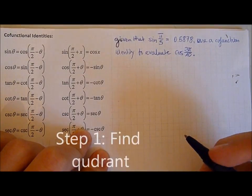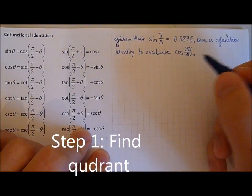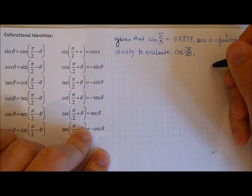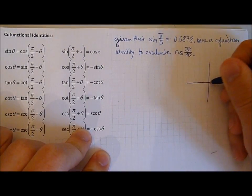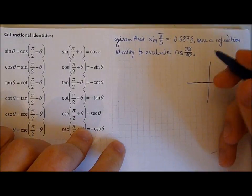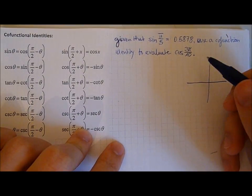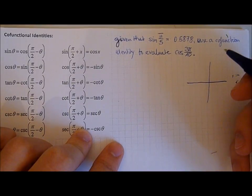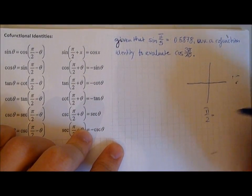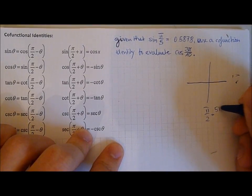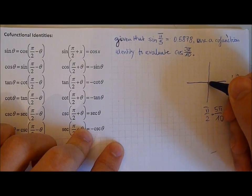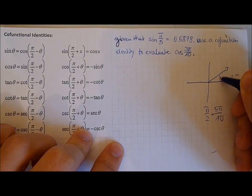So the first step is always to check if 3 pi over 10 is in quadrant 1 or 2. We can do this by simply checking if it is lower or higher than pi over 2. Well pi over 2 is equal to 5 pi over 10. So 3 pi over 10 is in quadrant 1 less than pi over 2. So let's say it's here.